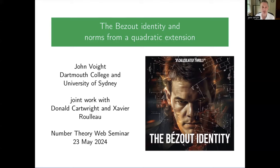I'd like to tell you about the Bézout identity and Northrop Quadratic Extension. This first slide is already a lie — Matt Damon, or the Matt Damon-like amalgam, hasn't yet signed on to the movie project that's indicated here. But we're working on it. This is joint work with Donald Cartwright and Xavier Rouleau.